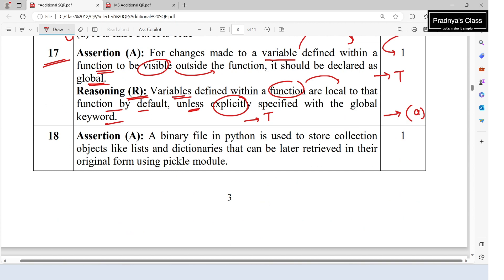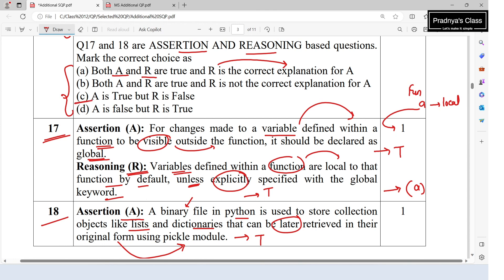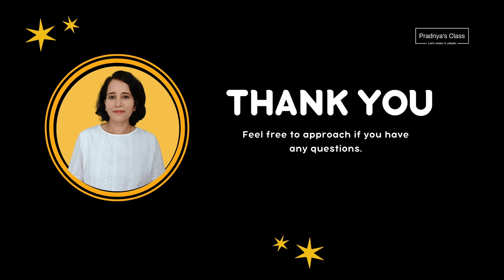For the last question, the assertion states that a binary file in Python is used to store collection objects like lists and dictionaries that can later be retrieved in their original form using the pickle module — this is true. The reasoning states that binary files are just like normal text files and can be read using a text editor like Notepad — this is false. Binary files cannot be opened in Notepad. So the correct option is C: A is true but R is false.